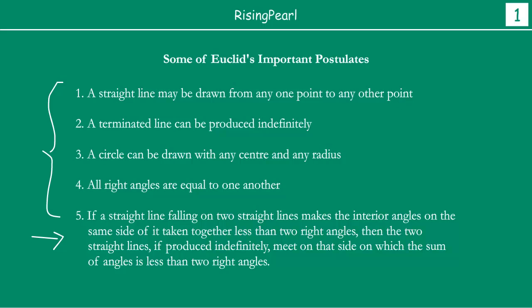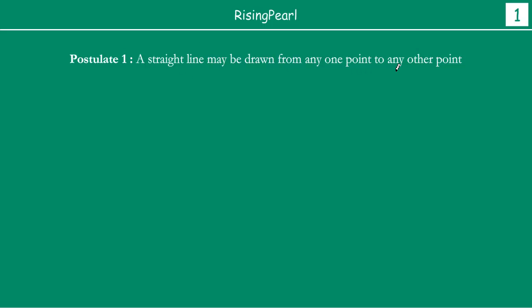Let us look into each one of them and find out what they actually mean. The first postulate says a straight line may be drawn from any one point to any other point. So maan lijo aapke paas ek point P hai and ek point Q hai. From point P to point Q you can actually draw a straight line. Euclid stopped short of explicitly saying this is the only straight line, but in his work he continuously implied that there is only one straight line that can be drawn between two points.